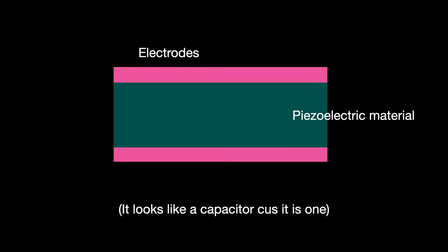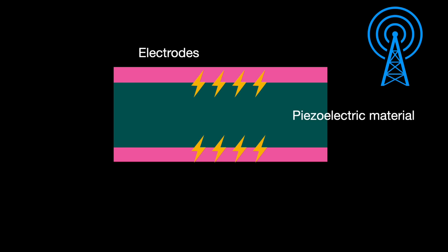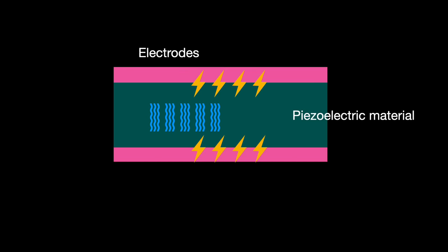Fundamentally, they work the same. At their core is a capacitor-like structure consisting of top and bottom electrodes sandwiching a layer of piezoelectric material, like quartz crystal. When an RF signal hits the electrodes, they make electric fields, which then cause the piezoelectric to generate acoustic waves. The waves travel between those electrodes vertically — up and down — through the piezoelectric material.